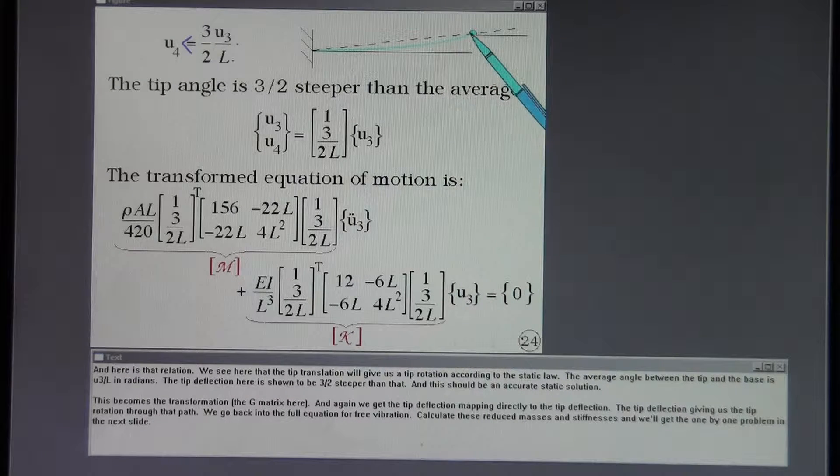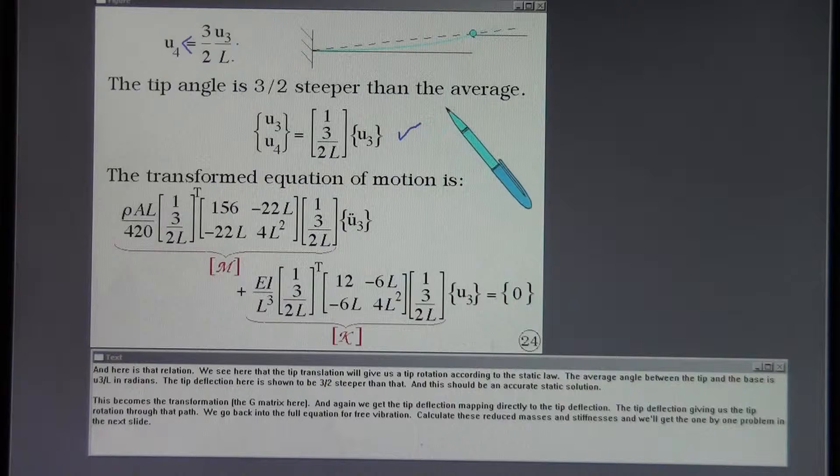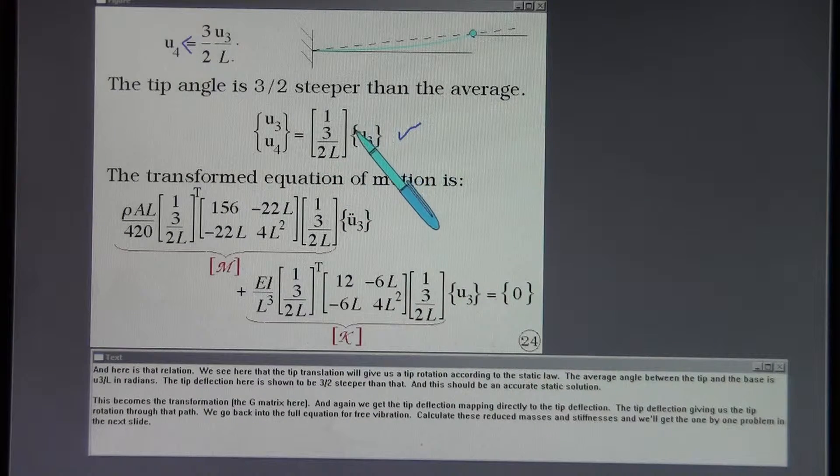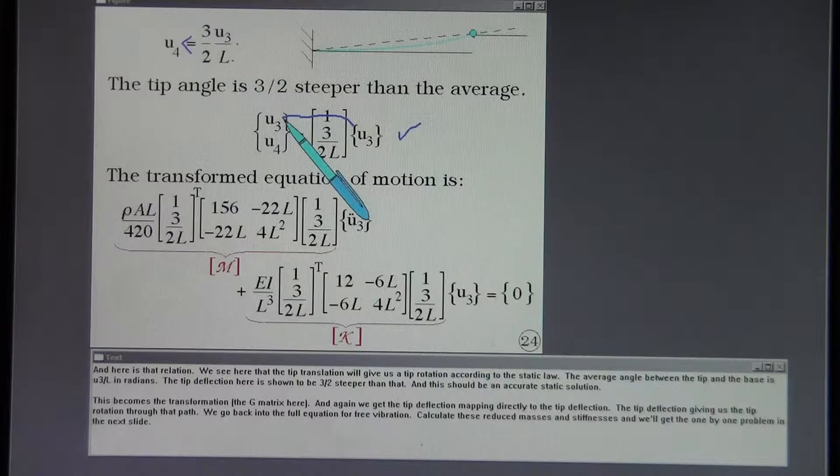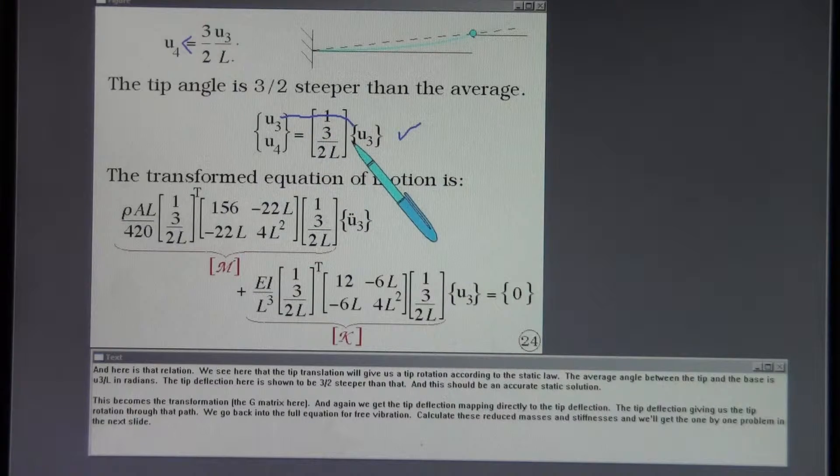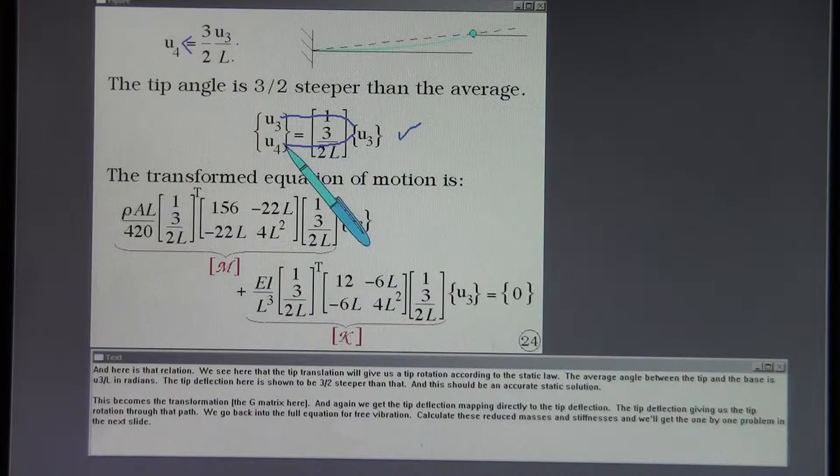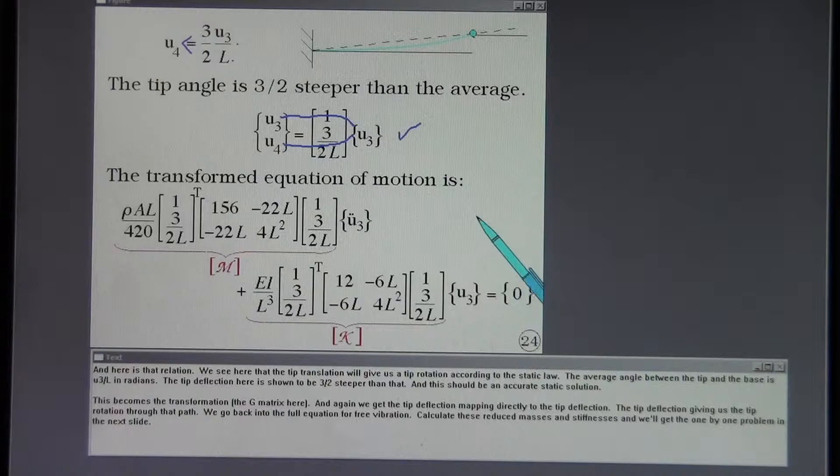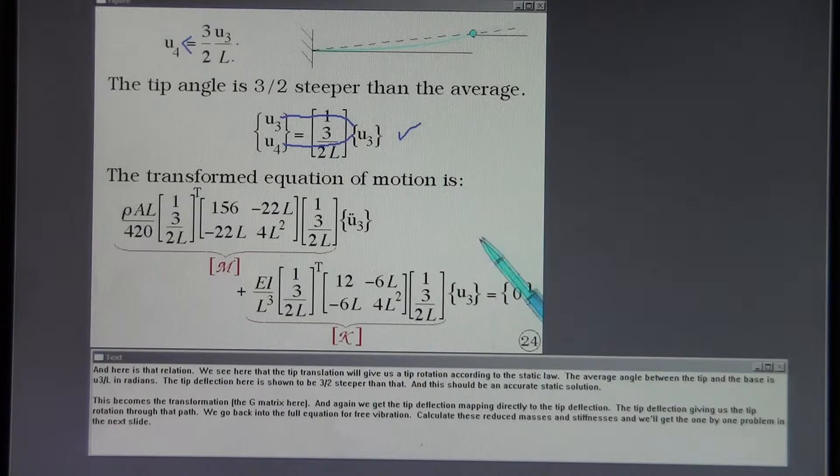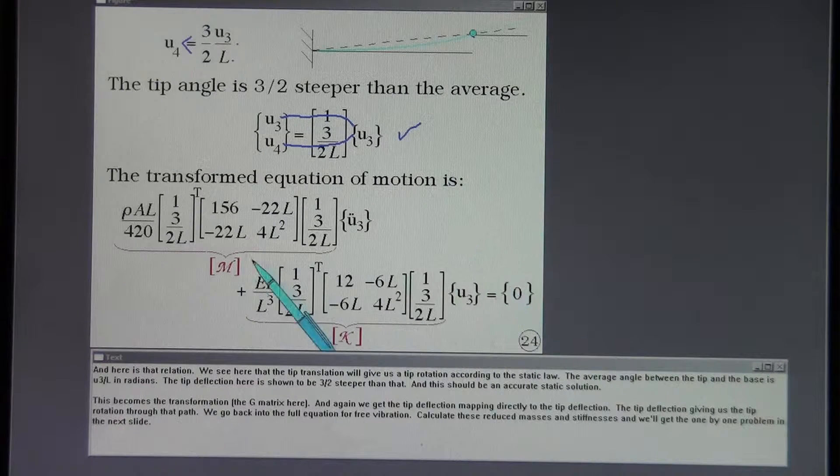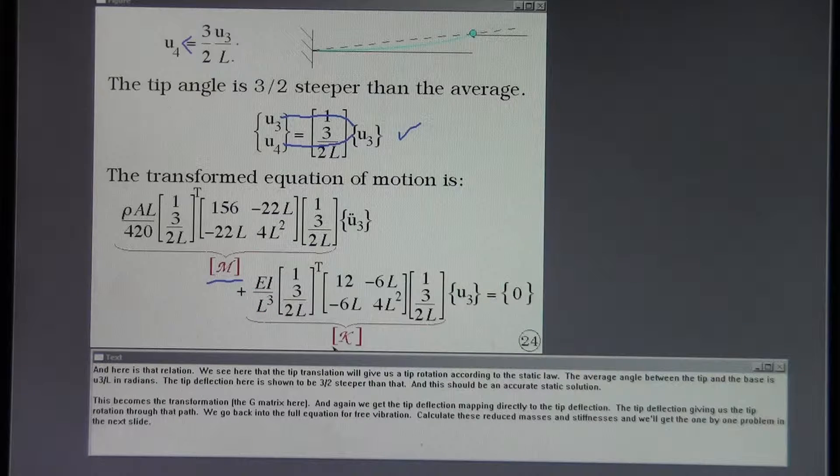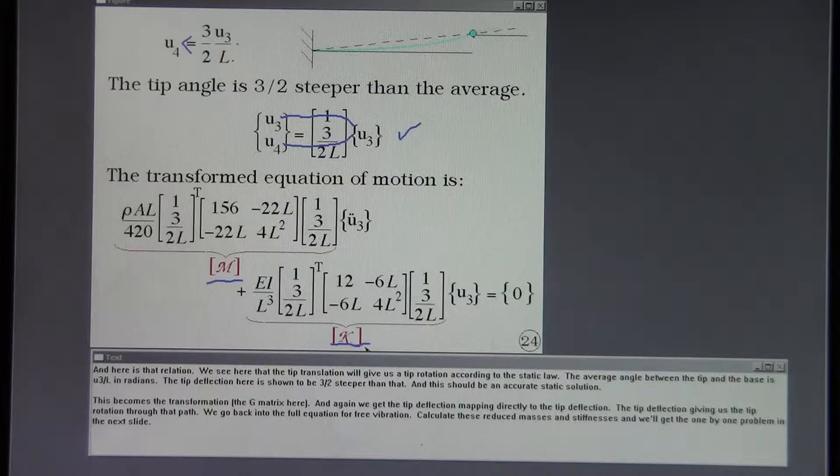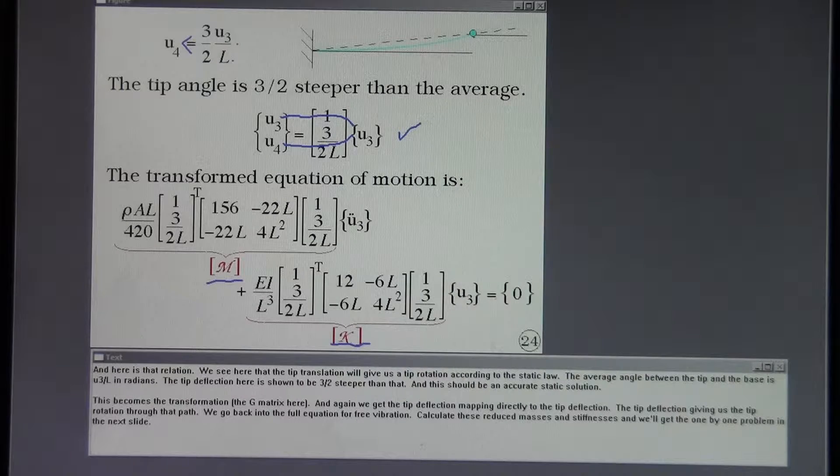This becomes the transformation. The G matrix here. And again we get the tip deflection mapping directly to the tip deflection. The tip deflection giving us the tip rotation through that path. We go back into the full equation for free vibration. And again calculate these reduced masses and stiffnesses. And we'll get the one by one problem in the next slide.